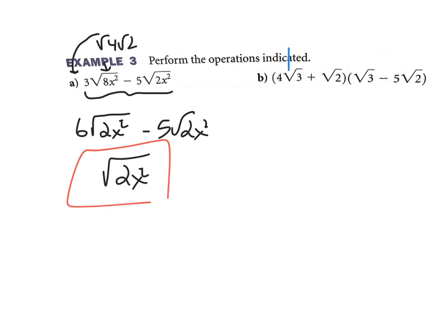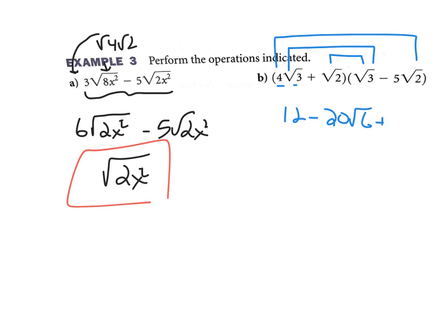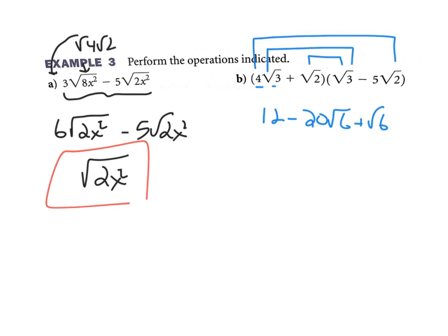Part B is just the FOIL method. Square root of 3 times square root of 3 gives square root of 9, which is just 3. So the first terms give 4 times 3, which is 12. Going outer: multiply the coefficients first — that's 20 — and multiply the radicals to get square root of 6, giving 20 times square root of 6. Going inside: square root of 2 times square root of 3 is square root of 6. Going last: square root of 2 times negative 5 times square root of 2 is negative 5 times 2, which is negative 10, since square root of 2 times square root of 2 is square root of 4, which is 2. Combining: 12 minus 10 is 2, and negative 20 root 6 plus 1 root 6 is negative 19 root 6.